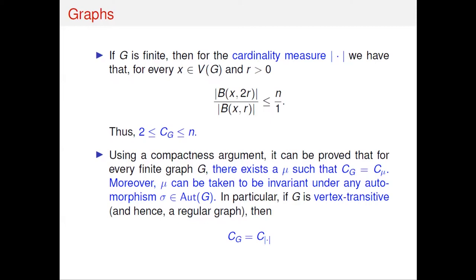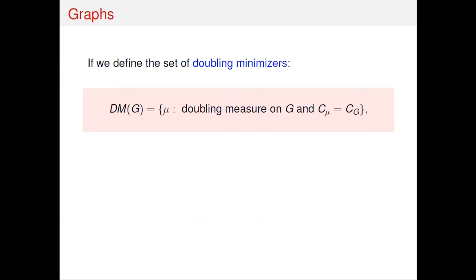This result applies to Cayley graphs as well. Regarding the collection of doubling minimizers: if mu is a doubling minimizer, any positive dilation of mu is also a doubling minimizer, since the constant cancels in the ratio. So doubling minimizers are not unique. We call this class DM(G). If it is nonempty, it is a convex cone: it is trivially invariant under positive dilations, and sums of minimizers are also minimizers.